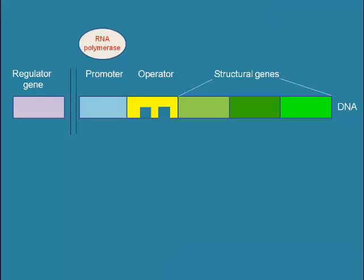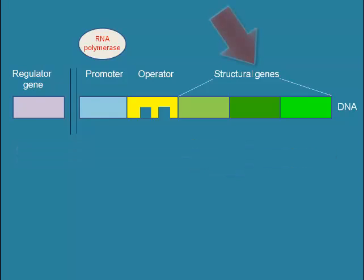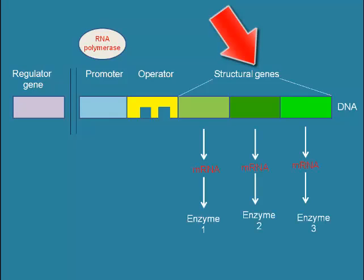An operon is a unit of DNA containing a cluster of genes under the control of a single section of DNA. The operon components are structural genes, which lie immediately next to each other. They code for enzymes to break down lactose, and are transcribed as a group.